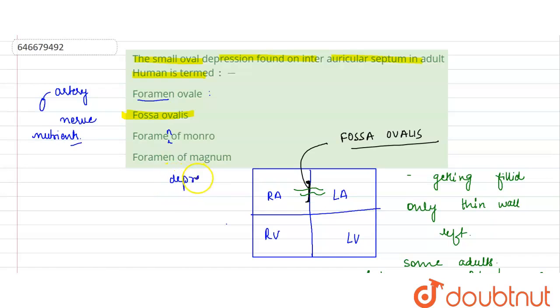Whereas the fossa, it is like a depression over here. The fossa that is present, it is a depression. So from this point also you can exclude this option. Foramen ovalis is found in the ear.